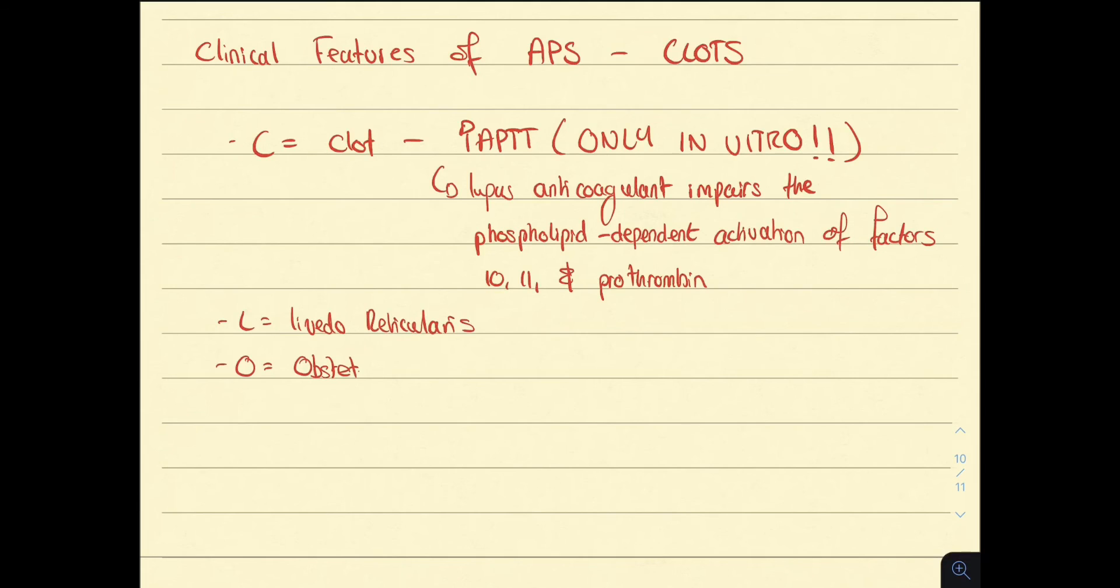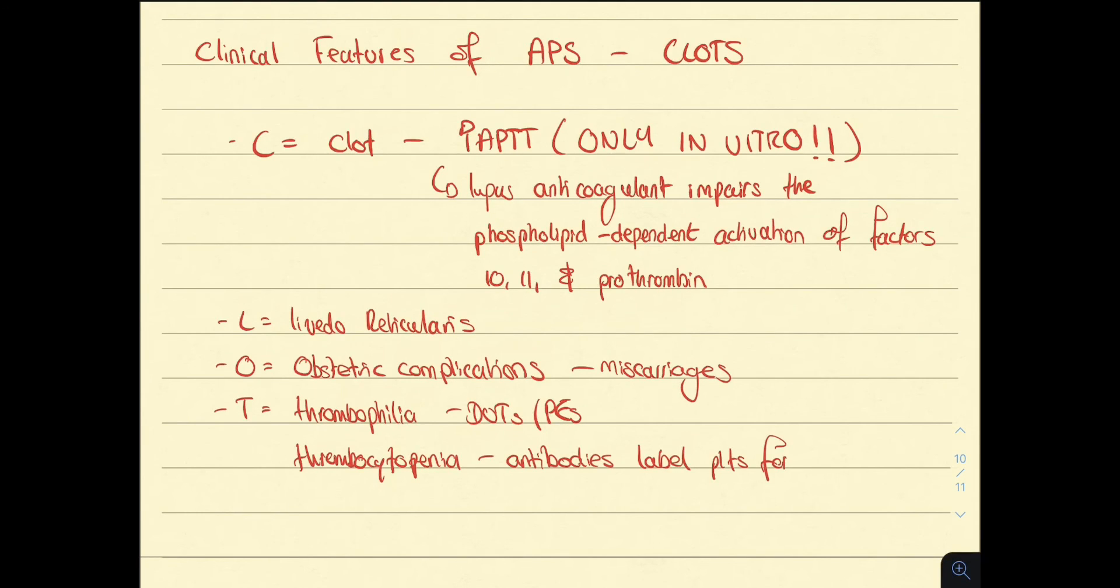The O stands for obstetric complications, and we've previously mentioned that patients tend to present with recurrent miscarriages. The T stands for thrombophilia, so patients can develop DVTs and PEs. The T also stands for thrombocytopenia. The reason why patients can develop a thrombocytopenia is because the antibodies can also label the platelets for destruction.